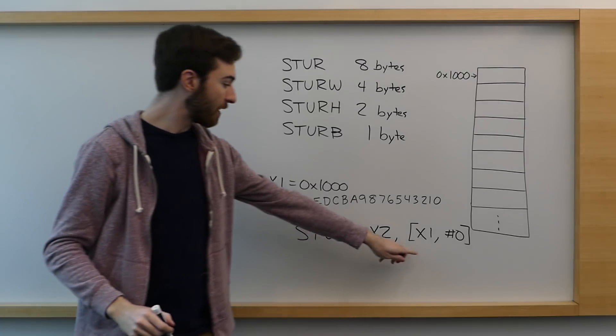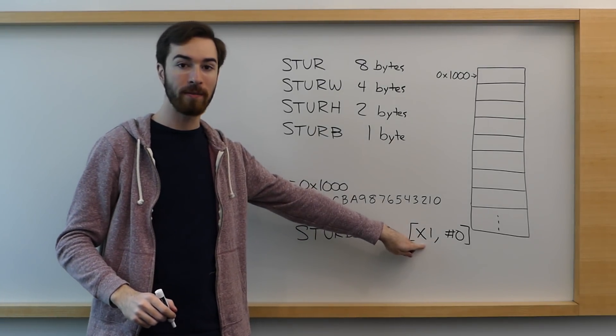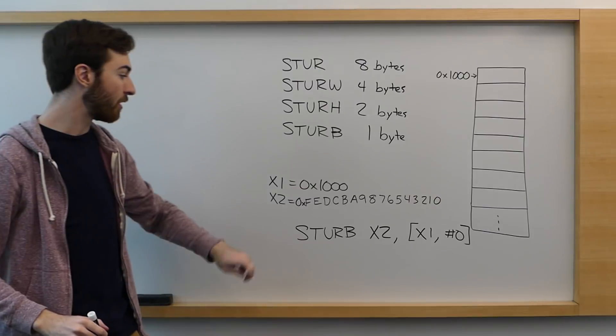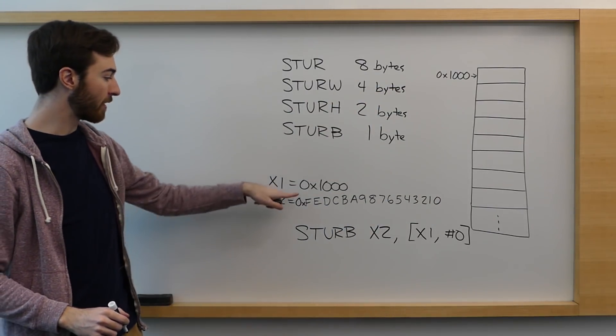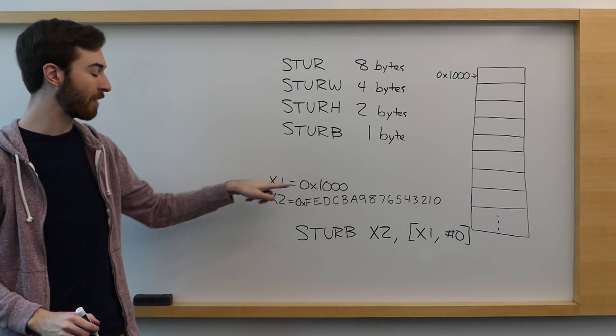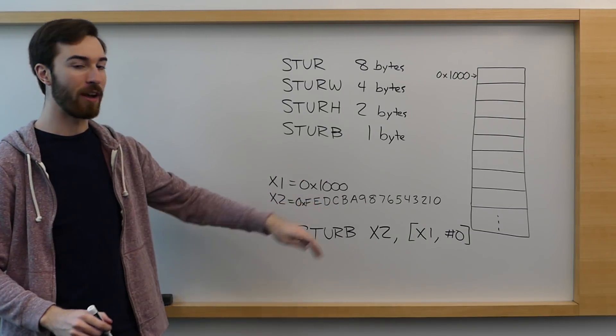And then you create the address that you're storing to with a register and a numerical offset. So what this will do is it takes the value in register one, adds the value zero to it, and stores the value in X2 to that spot in memory.